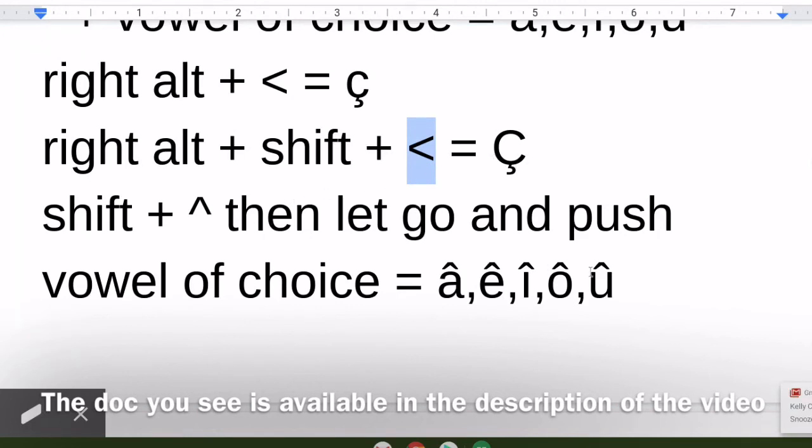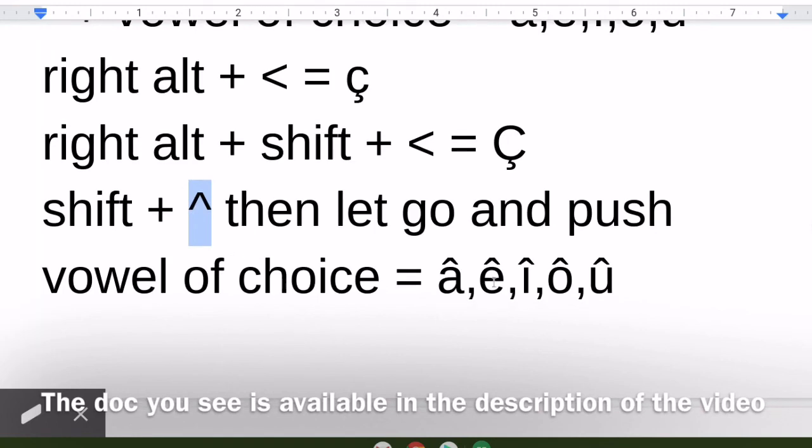And then lastly, if I want to get the vowel with a little hat on top of it, I'll push the shift key. And then this little guy, which is on the six key on the keyboard, right above the Y and the T. So shift that button and then let go and then push the vowel of choice and it'll come up like that.